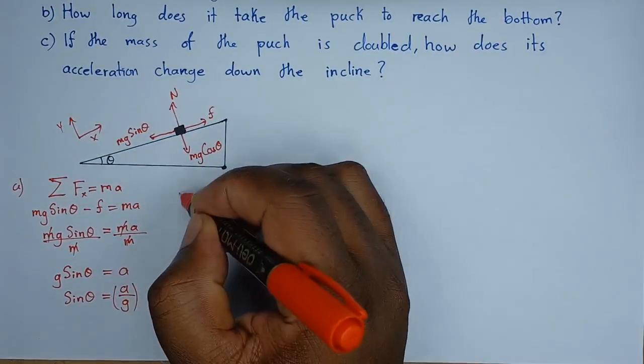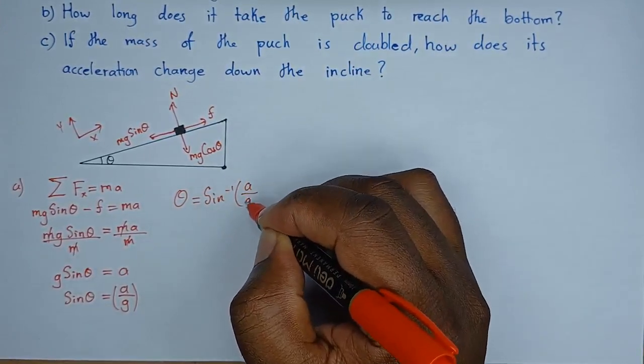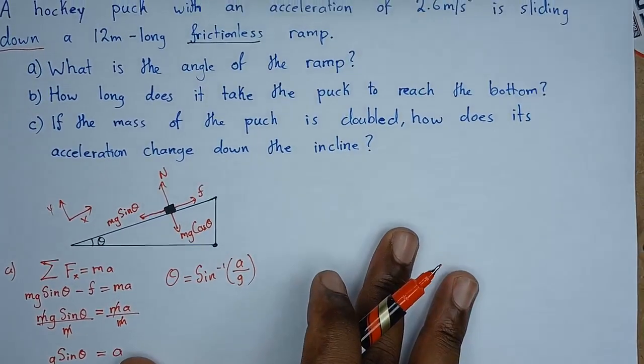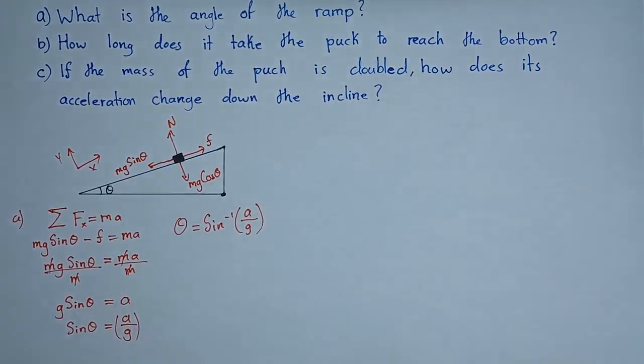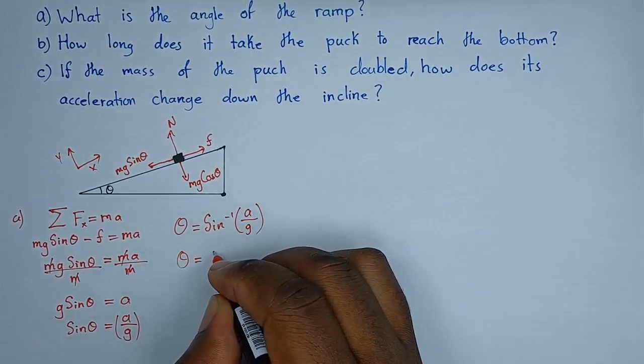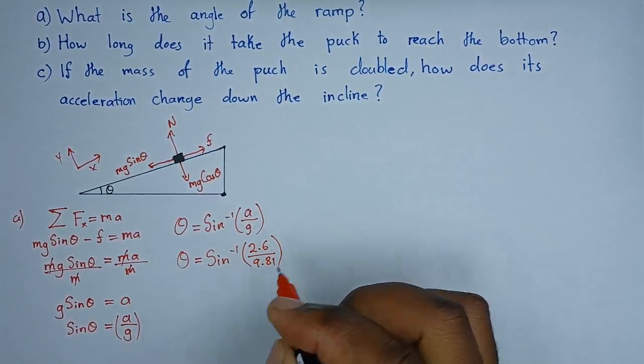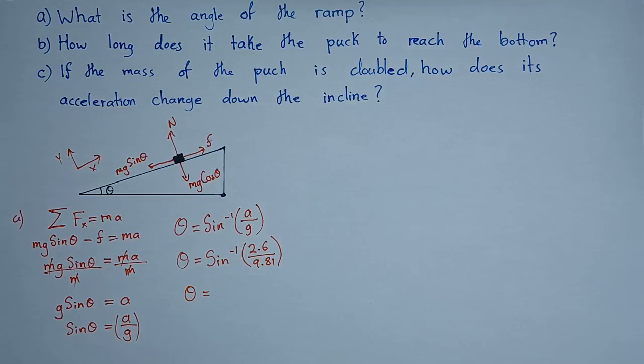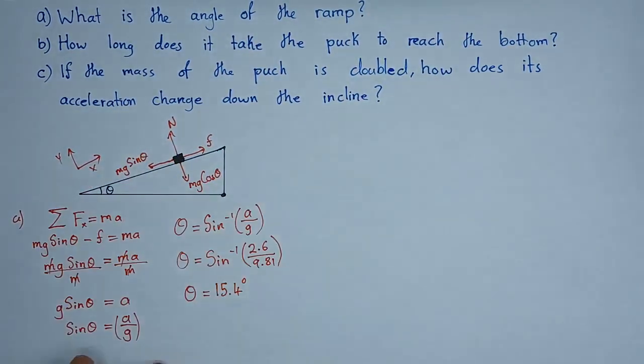Now, since we want the angle, theta will be equal to the inverse sine of a over g. So, if we look at our question, we have been told that acceleration is 2.6, and we know that acceleration due to gravity is 9.8. So, theta equals sine inverse of 2.6 over 9.8. So, let's complete this now. Make sure your calculator is in degrees. The inverse of sine, 2.6 divided by 9.81, I found 15.4 degrees.